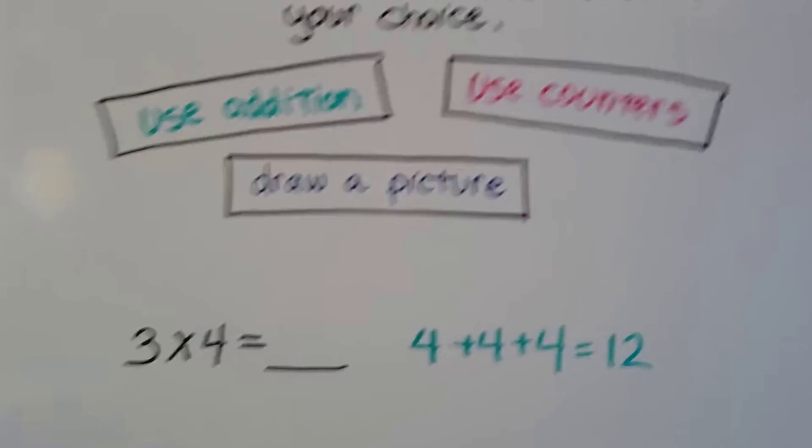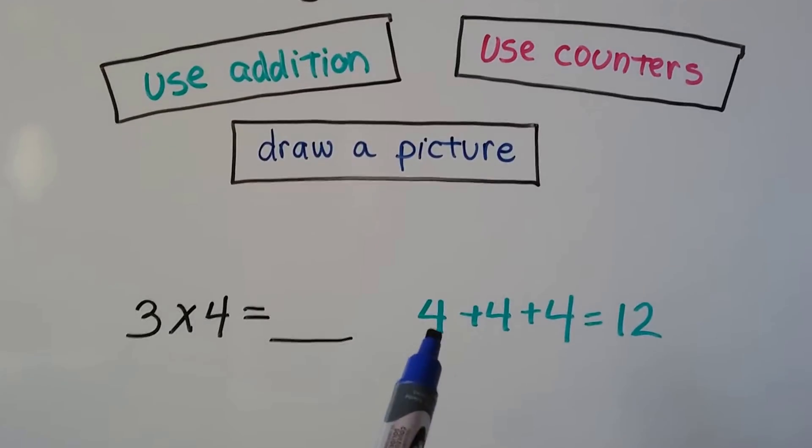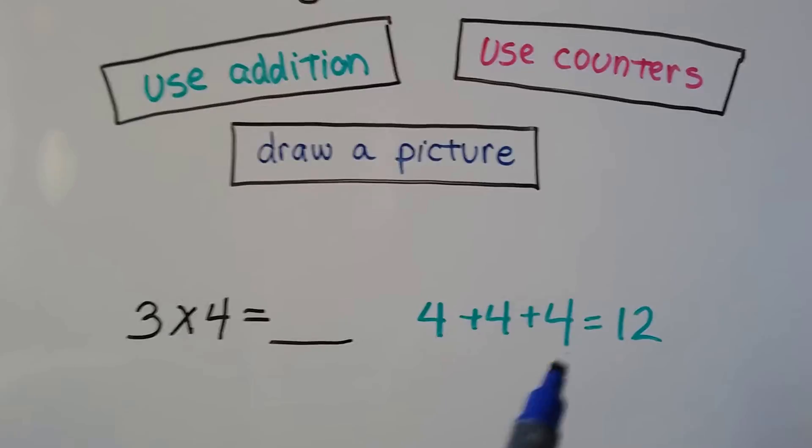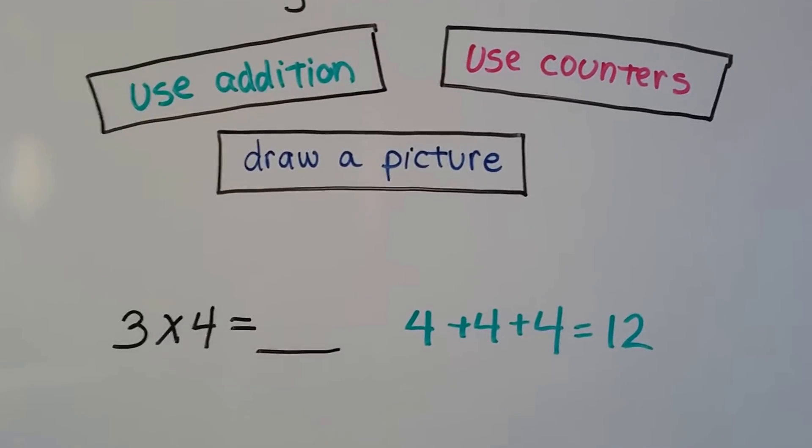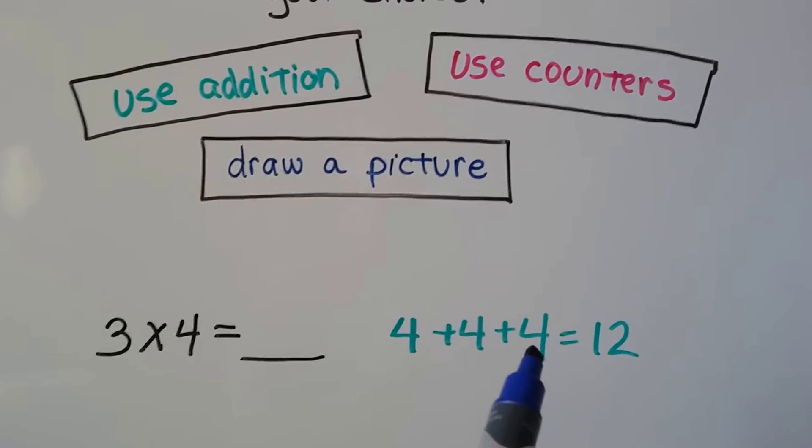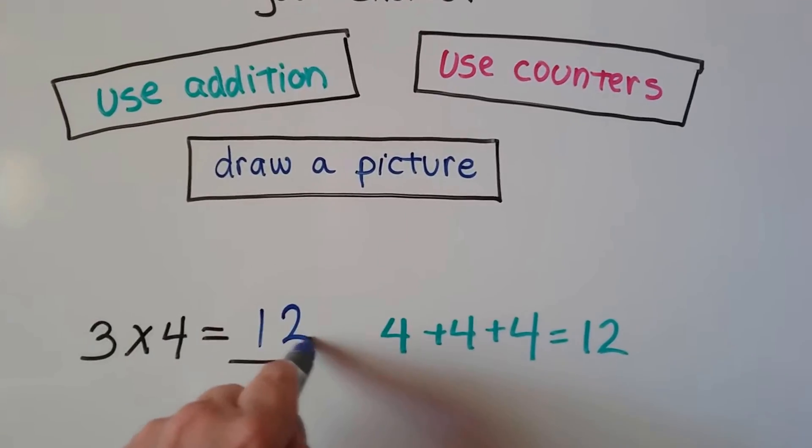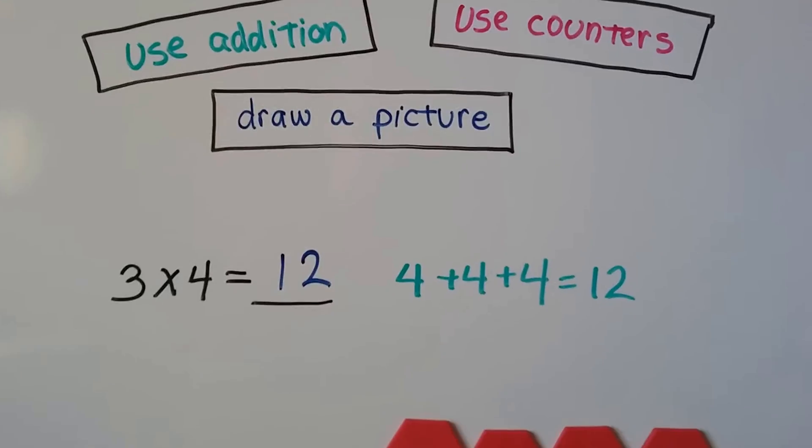So here we have 3 times 4. We can do 4 plus 4 plus 4. We have a 4 three times. And 4 plus 4 is 8, plus 4 more is 12. So 3 times 4 is equal to 12. 12 is our product.